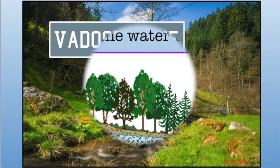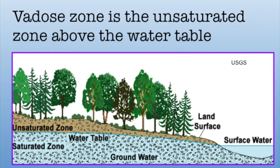The vadose zone is the unsaturated zone near the ground surface in the soil. This is where the soil contains air and water. The vadose zone is the area of negative pressure above the water table. This is the part of the soil where plants grow and burrowing animals live. The depth of this zone varies from zero to hundreds of meters.